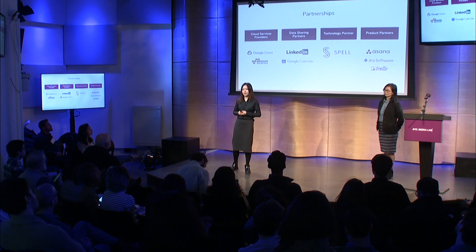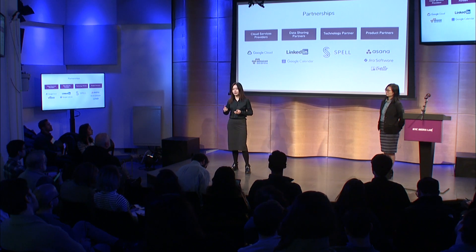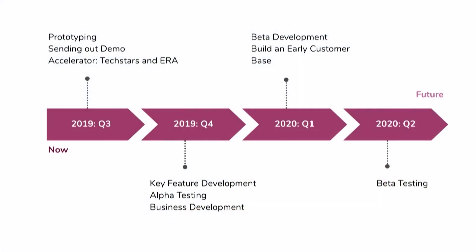For our partnership strategy, we will become partners with cloud service platforms, data sharing platforms, and machine learning partners. We will also share customers with project management tool partners like Asana, Jira, and Trello. Currently, we are optimizing our prototype and sending out demos. Our next steps are key feature development, alpha testing, beta development, and getting into other accelerators.